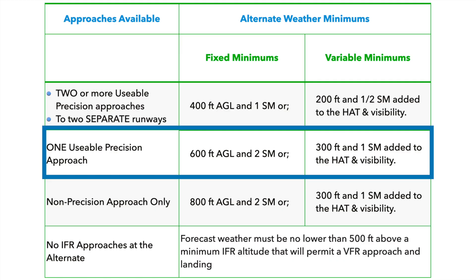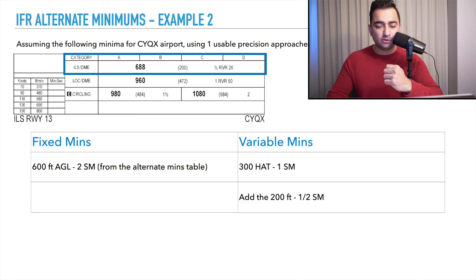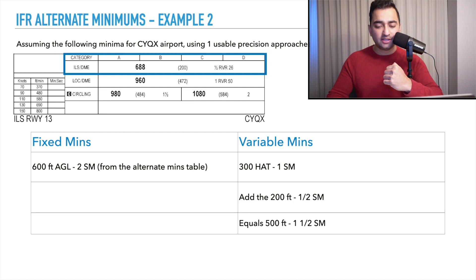Going back to our alternate minimums table, I've highlighted the one precision approach row. We're going to use 600 feet AGL and two miles for the fixed minimums. The variable minimums are 300 feet height above touchdown zone and one statute mile. Adding the 200 feet and half mile from the alternate minimums box gives us 500 feet and one and a half statute miles.